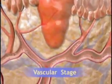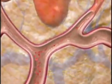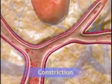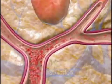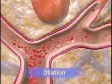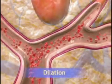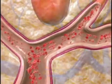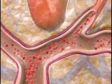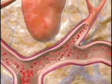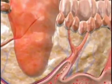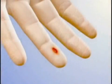In the vascular stage, arterioles and venules near the site of injury constrict briefly, then dilate. Dilation promotes congestion, while an accompanying increase in capillary permeability leads to the movement of fluid into the affected tissue, resulting in the five classic signs of inflammation.